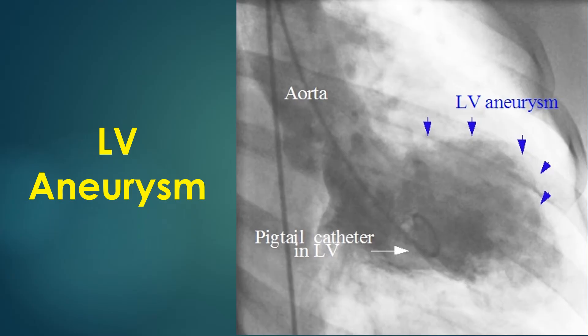In contrast, a pseudo-aneurysm is a ventricular rupture sealed off by the pericardium. It has a narrow neck and has a high risk of secondary rupture.